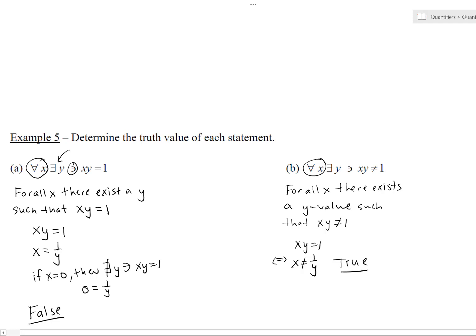As long as Y is not equal to one half, then X times Y will not equal one. So for any X you pick, you can always find a Y such that the product doesn't equal one, making the statement true.